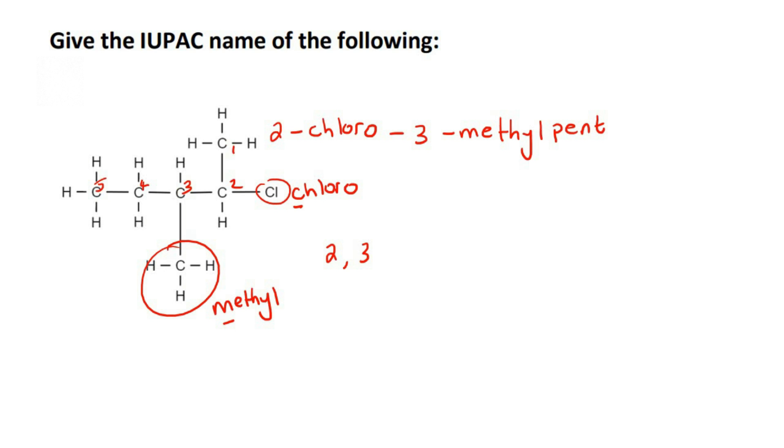Now, this is a haloalkane because it's got the halogen. Haloalkanes just have the same ending as a normal alkane. And so that is the name: 2-chloro-3-methylpentane.